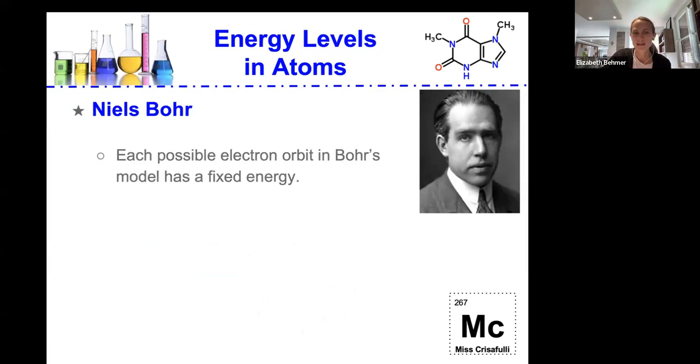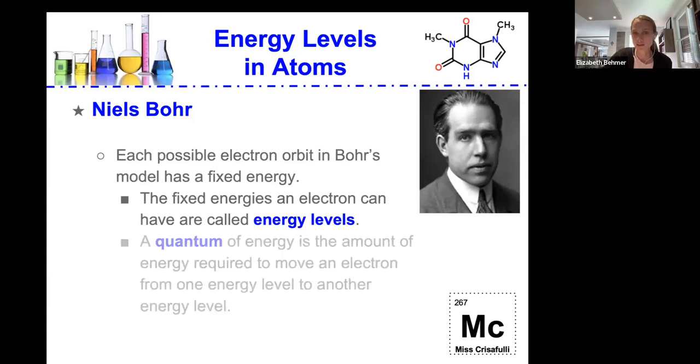Each possible electron orbit in Bohr's model has a fixed energy, and the fixed energies an electron can have are called its energy levels. A quantum of energy is the amount of energy required to move an electron from one energy level to another energy level. That's a quantum of energy.